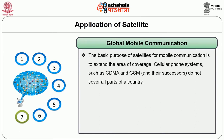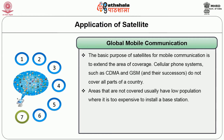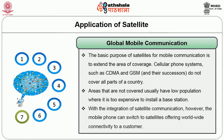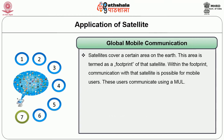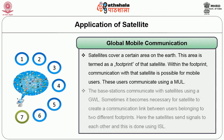Global Mobile Communication: The basic purpose of satellites for mobile communication is to extend the area of coverage. Cellular phone systems such as CDMA and GSM do not cover all parts of the country. Areas that are not covered usually have low population where it is too expensive to install a base station. With the integration of satellite communication, mobile phones can switch to satellite offering worldwide connectivity to a customer. Satellites cover a certain area on the earth — this area is termed as the footprint of that satellite. Within the footprint, communication with the satellite is possible for mobile users. These users communicate using a mobile user link, while the base station communicates with satellites using a gateway link.